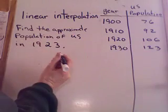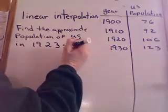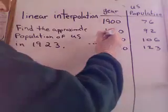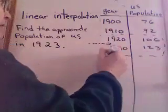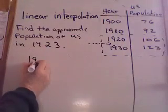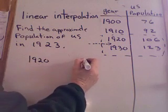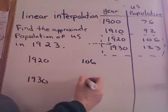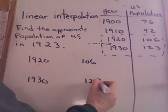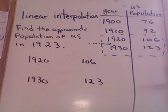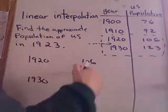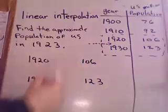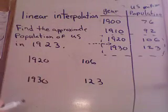You set up a little chart. First, you find out where 1923 would fit in the chart, and you notice it fits right in there. That's the group of numbers you copy down into a new chart for the interpolation: 1920 and its corresponding population, 106, and 1930 and its corresponding population, 123. This is US population in millions, by the way.